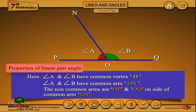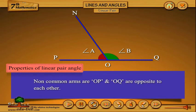The non-common arms are O P and O Q on side of common arm O N. Non-common arms O P and O Q are opposite to each other.